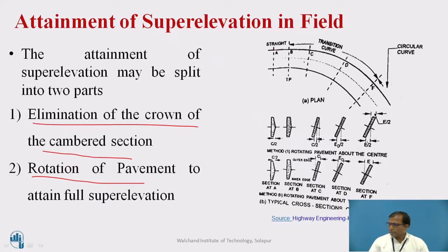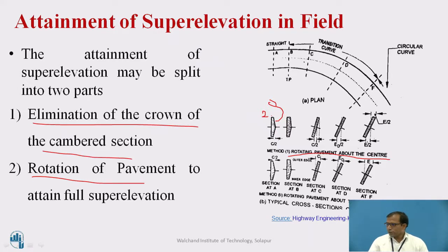Taking this diagram, you can see that as soon as the vehicle approaches from straight to curve, in the straight section between A and B, we can see this cross section — we are rotating the pavement with respect to the center line. From A to B, we have to rotate the outer half. At position A, the camber value on the outer side is 2.5% as well as on the inner side also 2.5%. So from 2.5%, to reach point B, we have to take the outer half from 2.5% to 0% at point B.